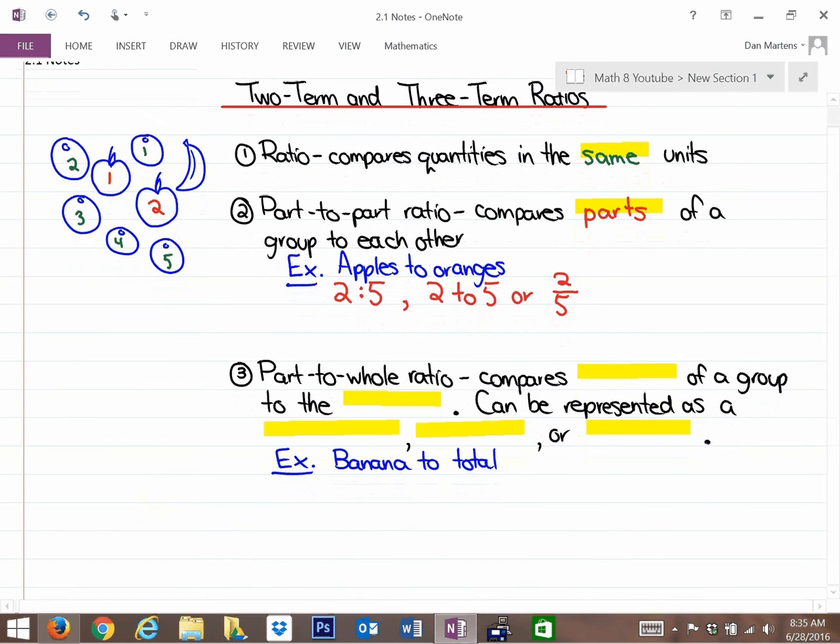And the final part of this lesson is a part-to-whole ratio. And what a part-to-whole ratio is, is it compares part of a group to the whole. And the thing we can do with that is we can represent it in one of three ways: we can represent it as a fraction, as a decimal, or as a percent.